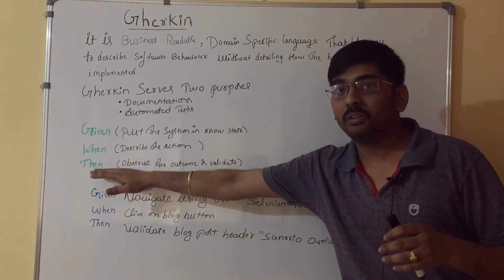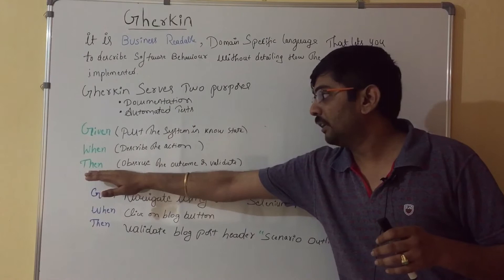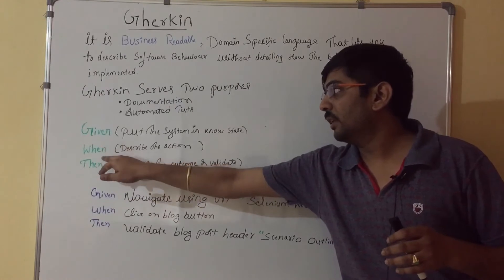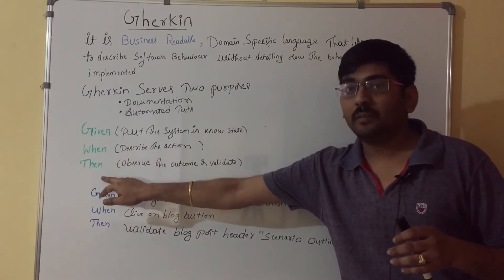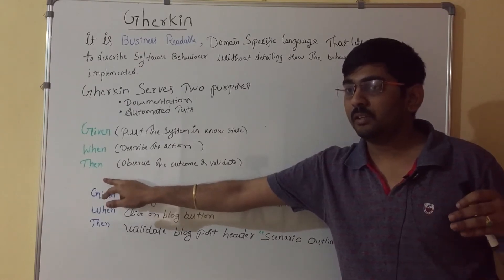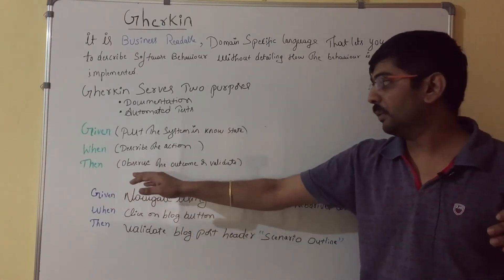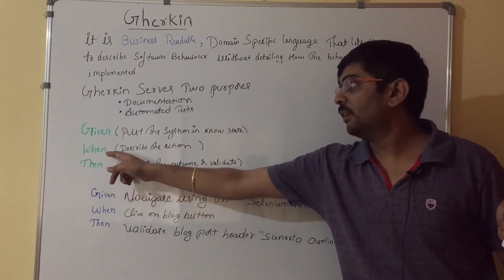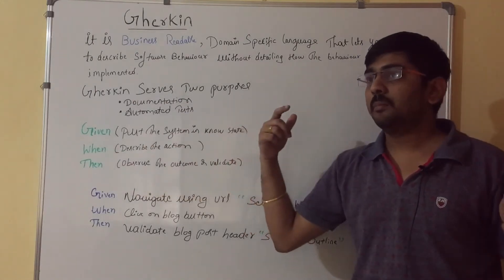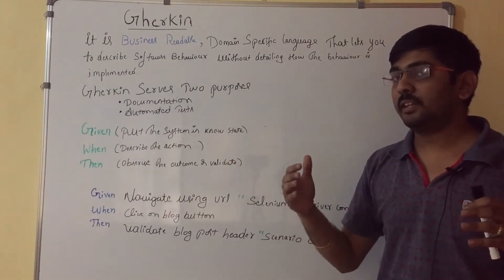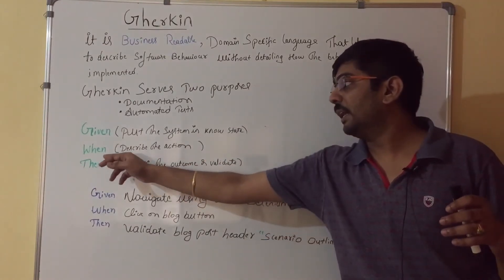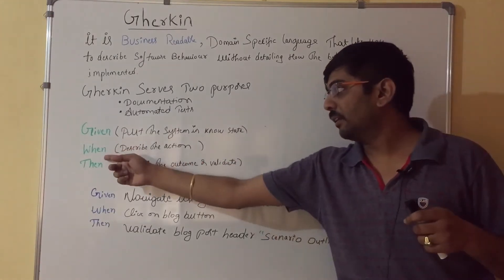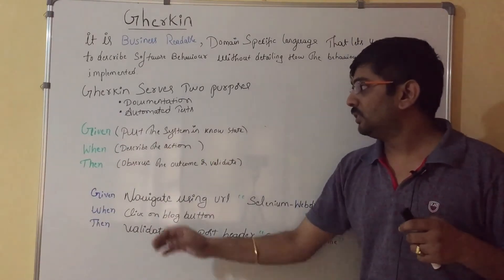We also have the And keyword, which is an extension of Given, When, or Then. If you have four or five things to validate in the same scenario, you can use And as an extension of Then. Similarly, if you want to perform multiple clicks on the same page, you can use And — for example, 'And click so-and-so button' or 'And enter this field'. And can be used with any of the keywords.